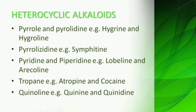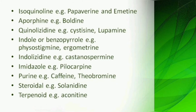Quinoline alkaloids — examples: quinine, quinidine. Isoquinoline — examples: papaverine and emetine. Porphine — example: boldine. Quinolizidine — examples: cytisine, lupamine. Indole or benzopyrrole — examples: physostigmine and ergometrine. Indolizidine — example: castanospermine. Imidazole ring — example: pilocarpine. Purine — examples: caffeine and theobromine. Steroidal — example: solanidine.